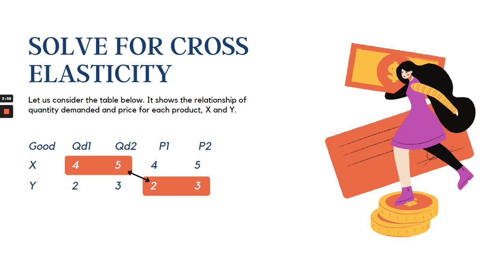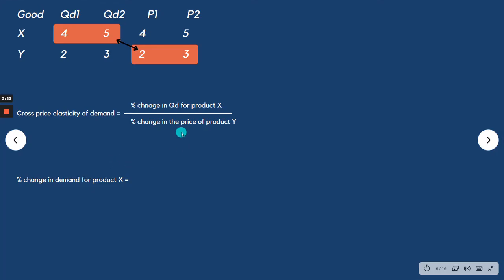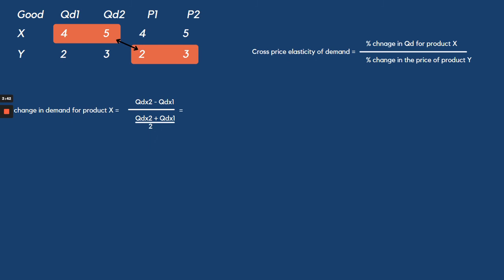Let us solve for cross price elasticity using this table. We have product X and product Y, with Q1, Q2, P1, and P2. We are going to compare these quantities and prices. The formula is the percentage change in quantity demanded for product X over the percentage change in the price of product Y. To solve the numerator, we use: Q_dx2 minus Q_dx1 over the average quantity demanded.